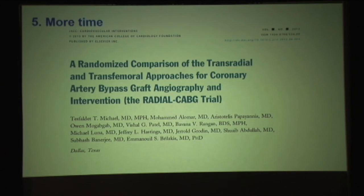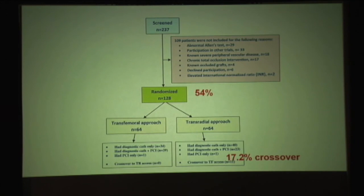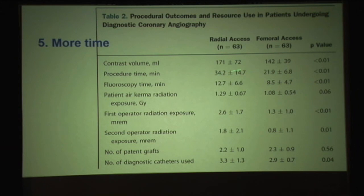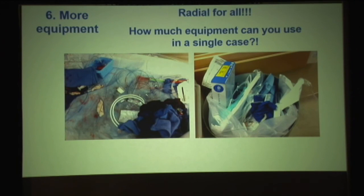Reason five: how much time does it take? This is the only randomized trial of radial versus femoral in bypass patients — 17% crossover. Look at how much more contrast it takes, how much more fluoroscopy time, and the operator dose is actually double with radial. So you get double radiation with radial. And do you want to spend the public's healthcare dollars on that?